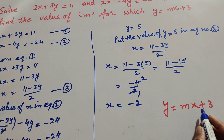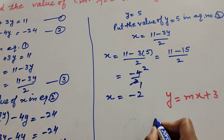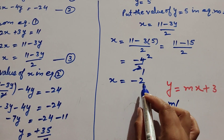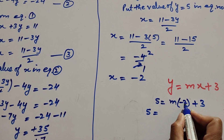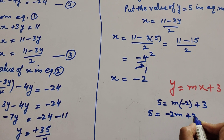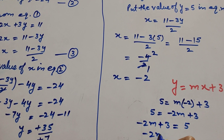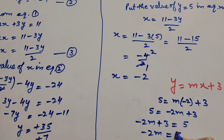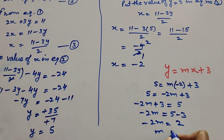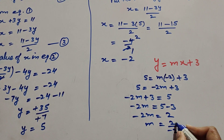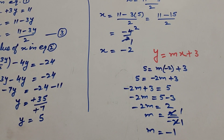In y equal to mx plus 3, we substitute y equal to 5 and x equal to minus 2. So 5 equal to m times minus 2 plus 3, which gives minus 2m plus 3 equal to 5. Transposing 3 to the right hand side: minus 2m equal to 5 minus 3 equal to 2. Dividing both sides by minus 2, the 2s cancel, so m equal to minus 1.